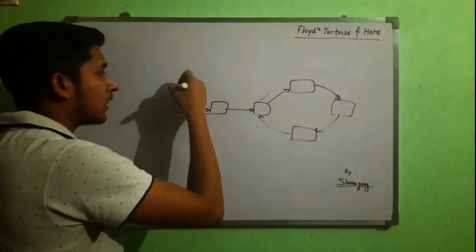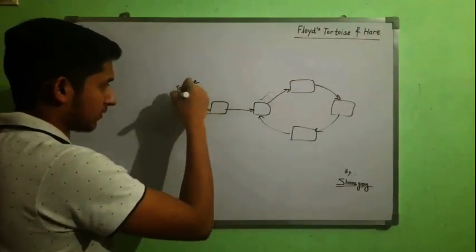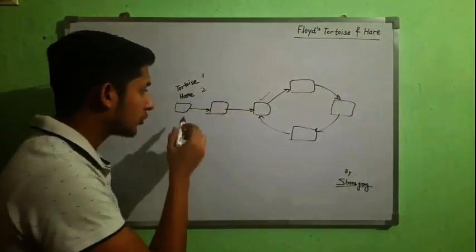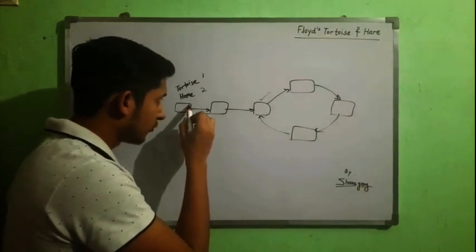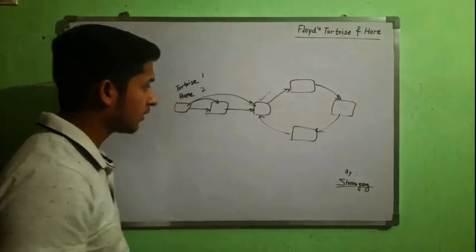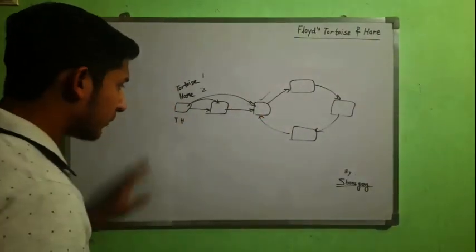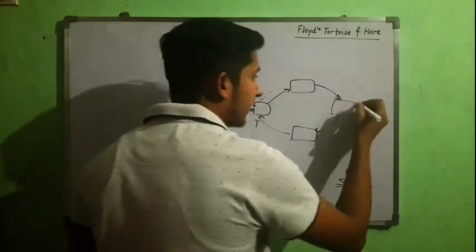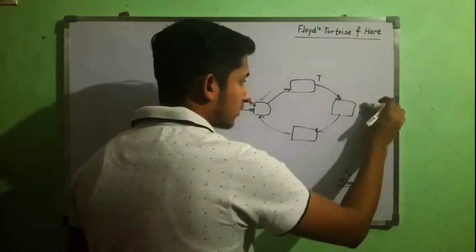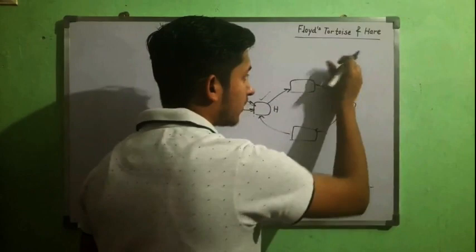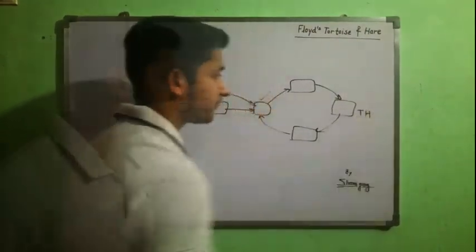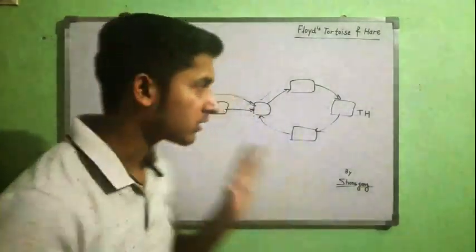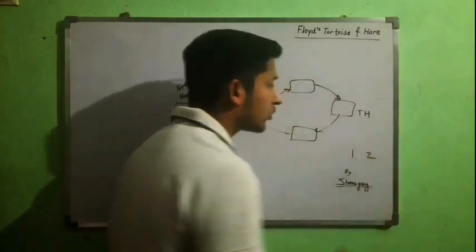Here's how it works: I'll start a tortoise and a hare from the first node. The tortoise has speed one and the hare has speed two. So when the tortoise moves one step, the hare moves two steps. Whenever there is a linked list having a cycle, at some point these two will meet — because ultimately they are in a cycle and one has speed one while the other has speed two, so they will meet at some point.